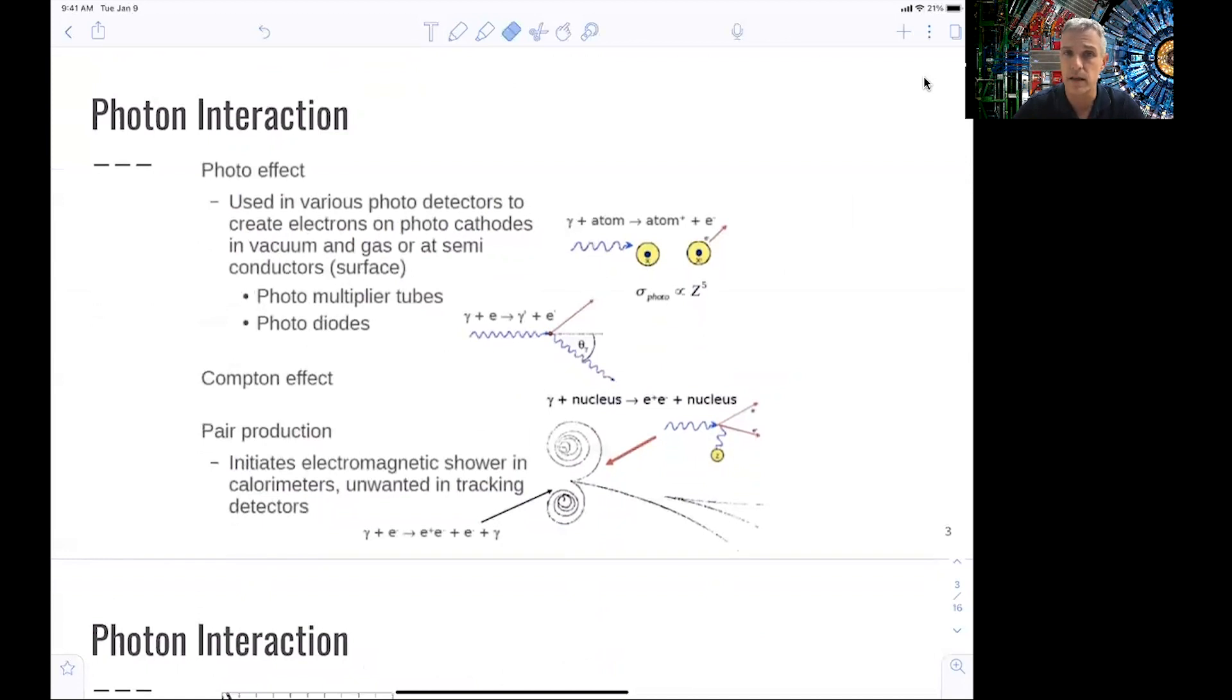In the photo effect, we have a photon interacting with an atom and then kicking out an electron. And then your detector has a chance to identify the energy and the momentum of the electron. This concept is used in photomultiplier tubes, where the kicked out electron is further amplified, and that leads to a shower of electrons which can be measured. Photodiodes also use this effect.